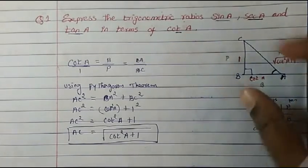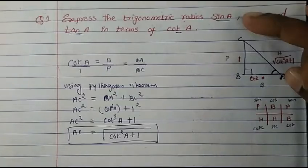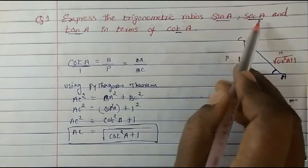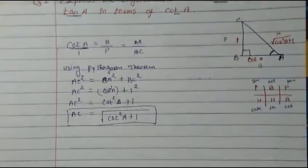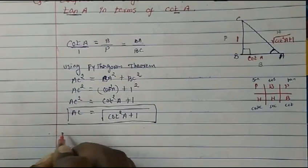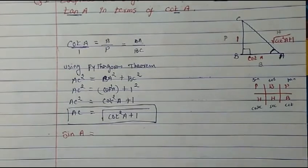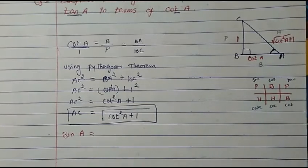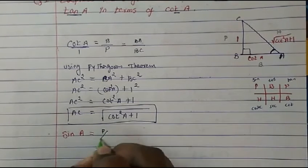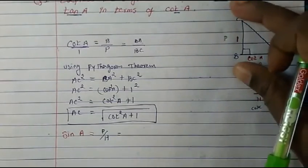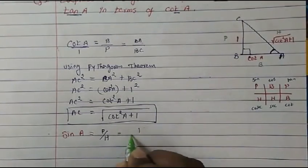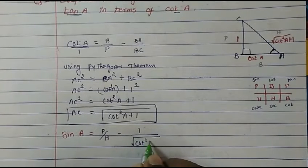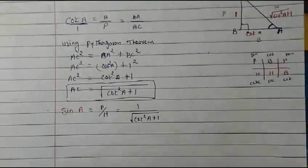Now we write the values asked of us: sine A, sec A, and tan A. First, sine A. Sine A is perpendicular upon hypotenuse. Perpendicular is 1, and hypotenuse is root of (cot squared A plus 1). So sine A equals 1 over root(cot squared A + 1). This is sine A expressed in terms of cot A.